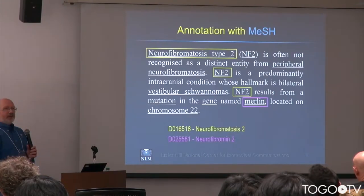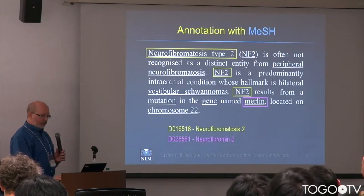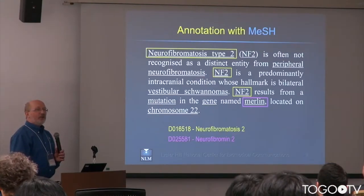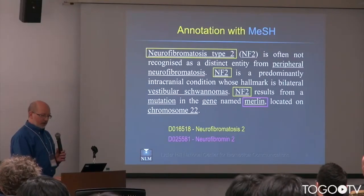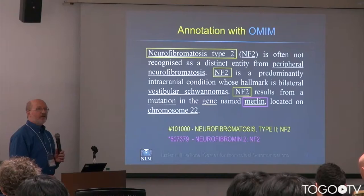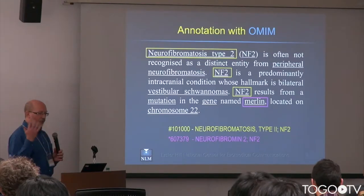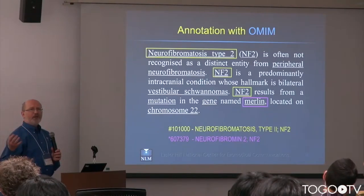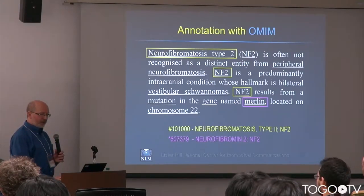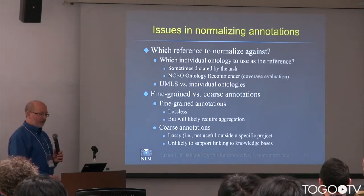Annotations can be made to different standards and different references. The same piece of text can be annotated with MeSH — the medical subject headings developed at NLM for indexing MEDLINE — or with OMIM, Online Mendelian Inheritance in Man, very often used as a reference for Mendelian genetic diseases. OMIM is much more than a terminology; it's actually a knowledge base, and we can use it for more than just terminology.